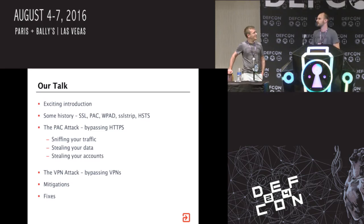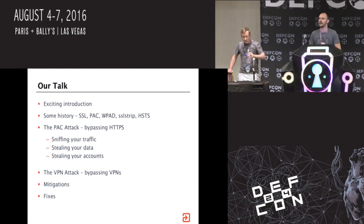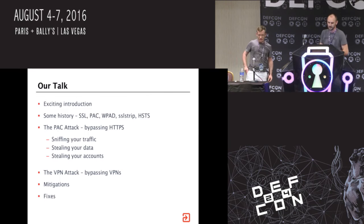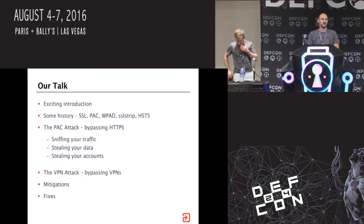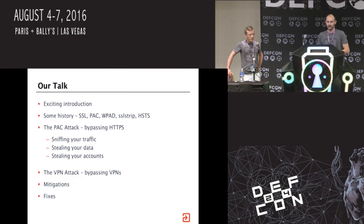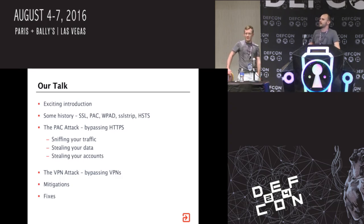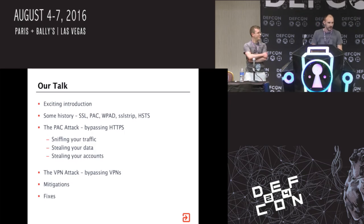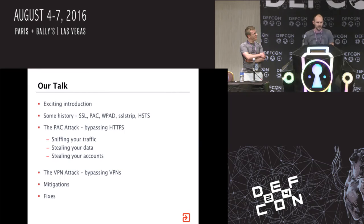We're going to start with some history. This is the 101 track. We're going to talk a little bit about the problem space, what's been going on there, how we got to where we are today, and how the attack we're going to describe fits into all of that. Then we're going to explain the attack - show how you can sniff data from HTTPS streams, steal that data, do something with it, and show how it can ultimately be used to steal your online accounts. We'll then talk about VPNs and how they protect us or not, put in place some real mitigations, and talk about fixes put in place by various vendors.